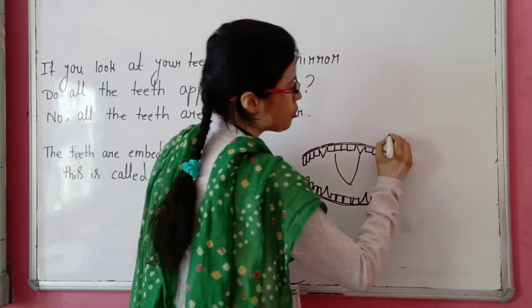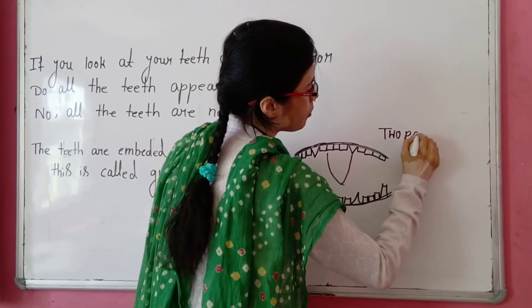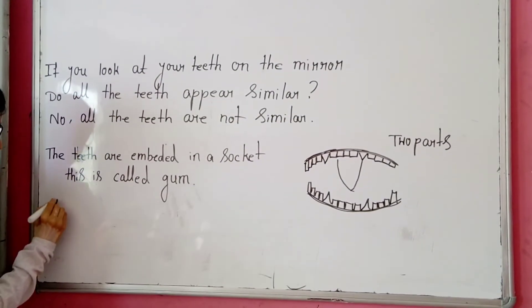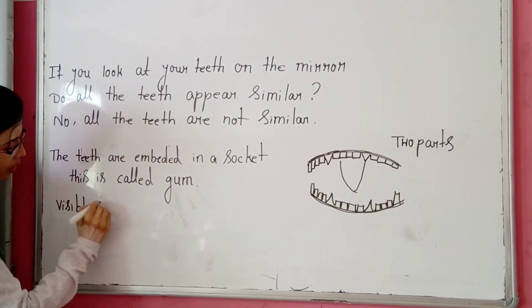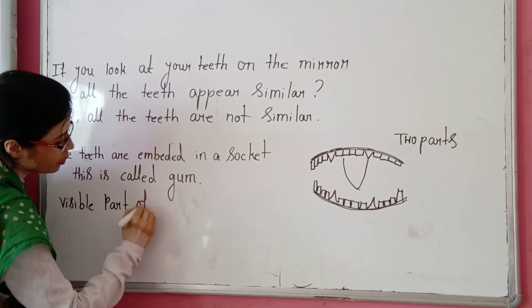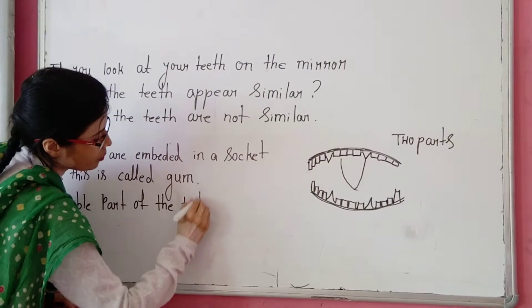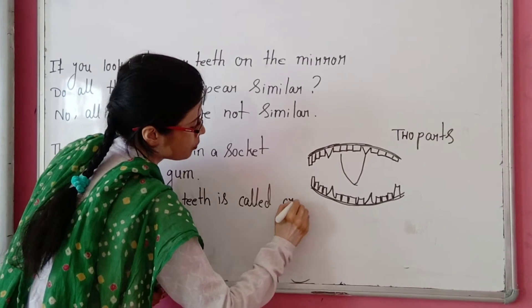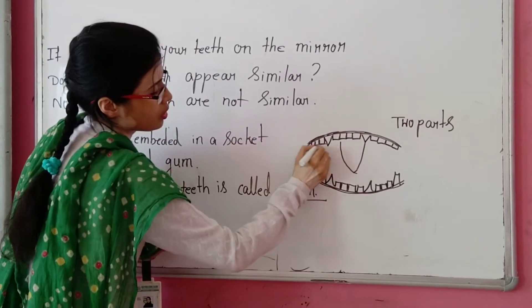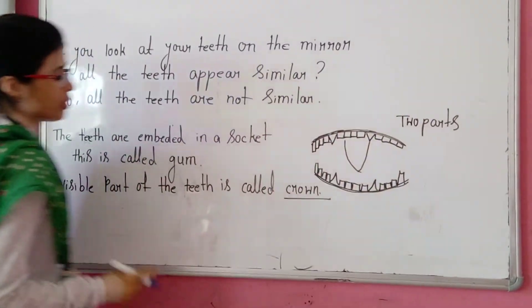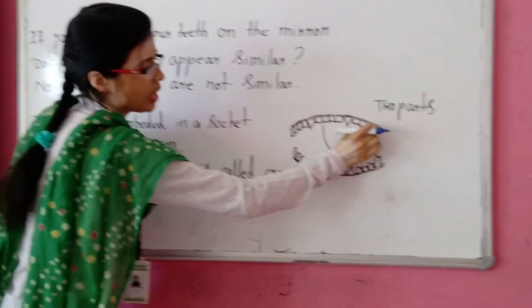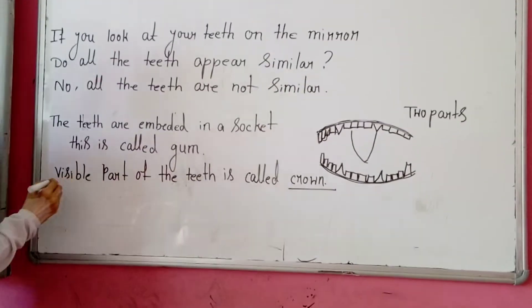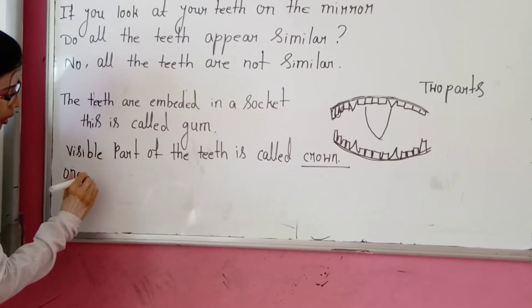There are two parts of teeth. One is the visible part of the teeth, which is called the crown. The crown is the visible part above the gum.